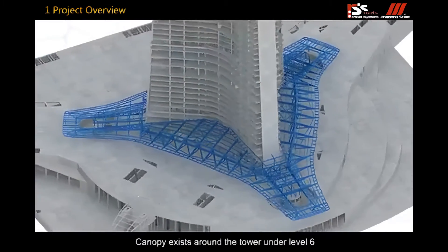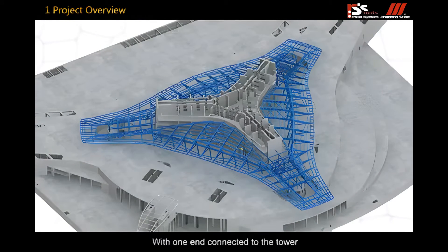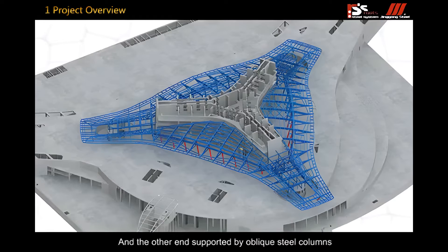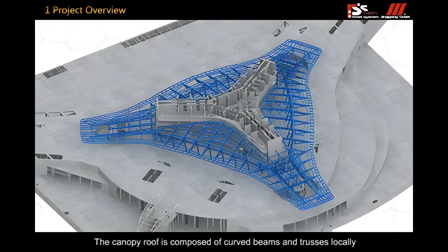Canopy exists around the tower under level 6 with one end connecting to the tower and the other end supported by oblique steel columns. The canopy roof is composed of curved beams and trusses locally.